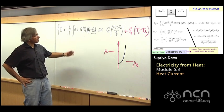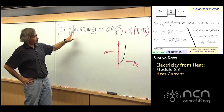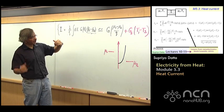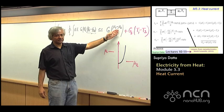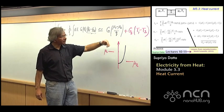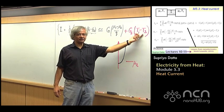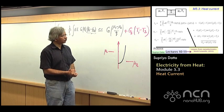That is, currents where the two contacts not only have a voltage across them, that's this mu1 minus mu2, but also could have a temperature difference.